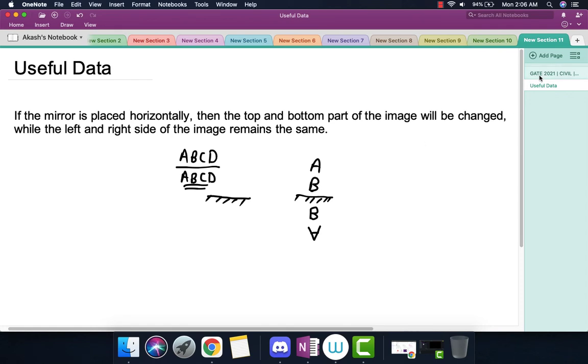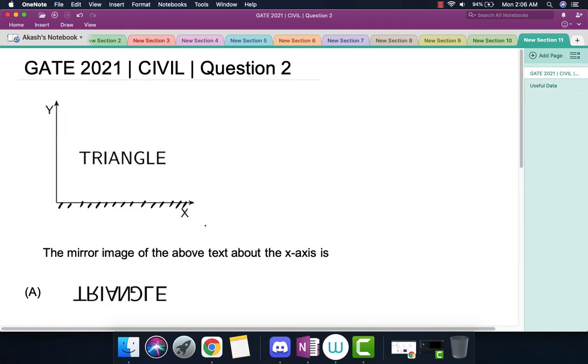So let's use this concept and solve the question. Now let's map what the word TRIANGLE would look like in the mirror. The letter E would be inverted. The letter L, since the bottom part comes to the top, would be inverted. The letter G would be inverted. The letter N, since the top part goes to the bottom, would be inverted accordingly.